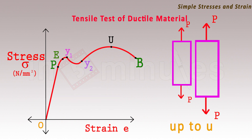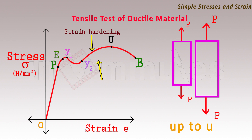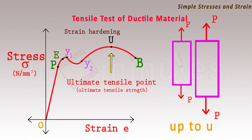Upon further increasing the load beyond point Y2, there is a considerable increase in load for further straining, and this is due to the phenomenon called as strain hardening. The curve again rises up, and point U is called as the ultimate tensile point or ultimate tensile strength of a material. The ultimate tensile point is the maximum stress encountered in a tensile test of a material.